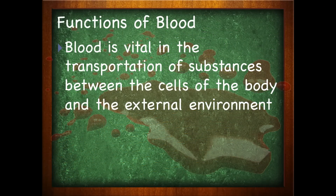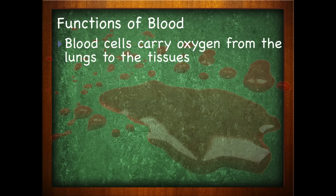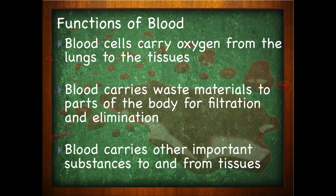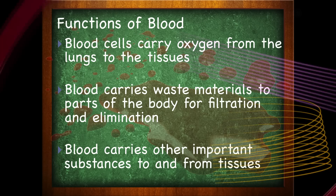So let's take a look at the more clinical functioning of blood. Blood will carry oxygen from the lungs to the tissues. It will carry waste materials to parts of the body for filtration and elimination. It carries other important substances to and from tissues, such as nutrients and hormones. Blood, just like the highways, also has to have a protective function — just as highways have emergency services and police, blood vessels also have a protective function.